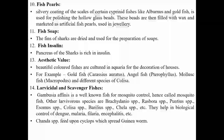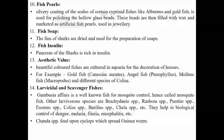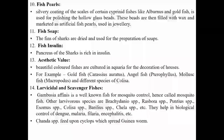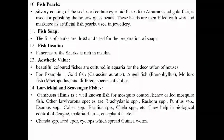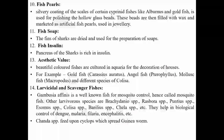The tenth importance is fish pearls. The silvery coating of scales of certain cyprinid fishes like Alburnus and goldfish is used for polishing hollow glass beads. These beads are then filled with wax and marketed as artificial fish pearls used in jewelry.